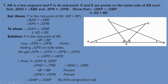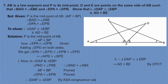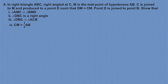Since triangle DAP is congruent to triangle EBP, AD will be equal to BE by CPCT. Moving on to the eighth problem.